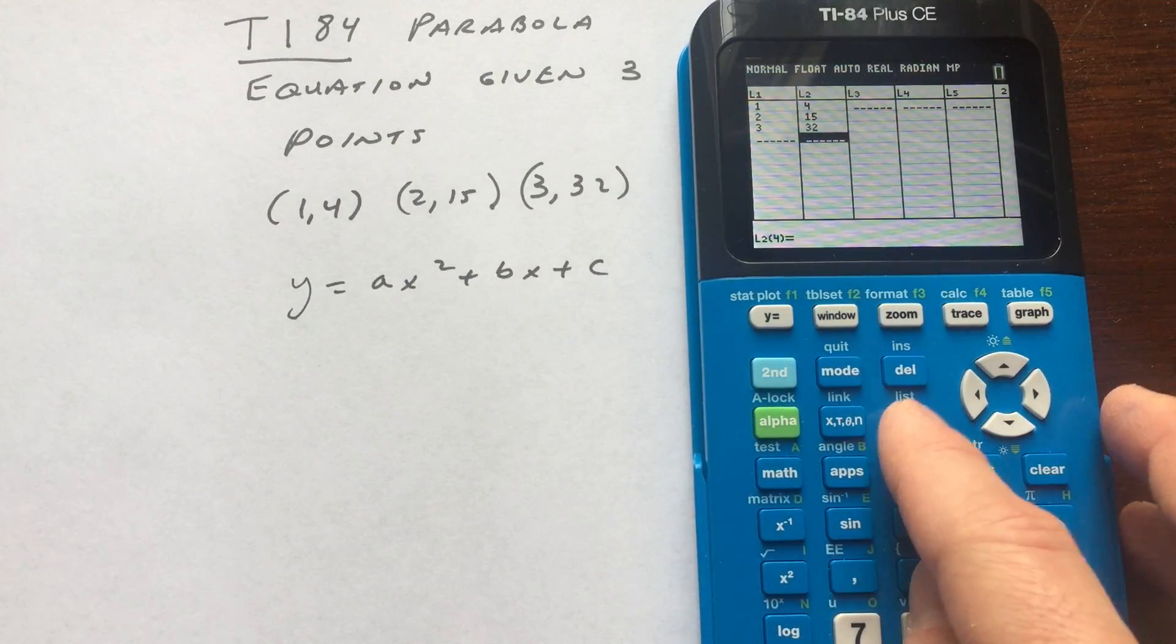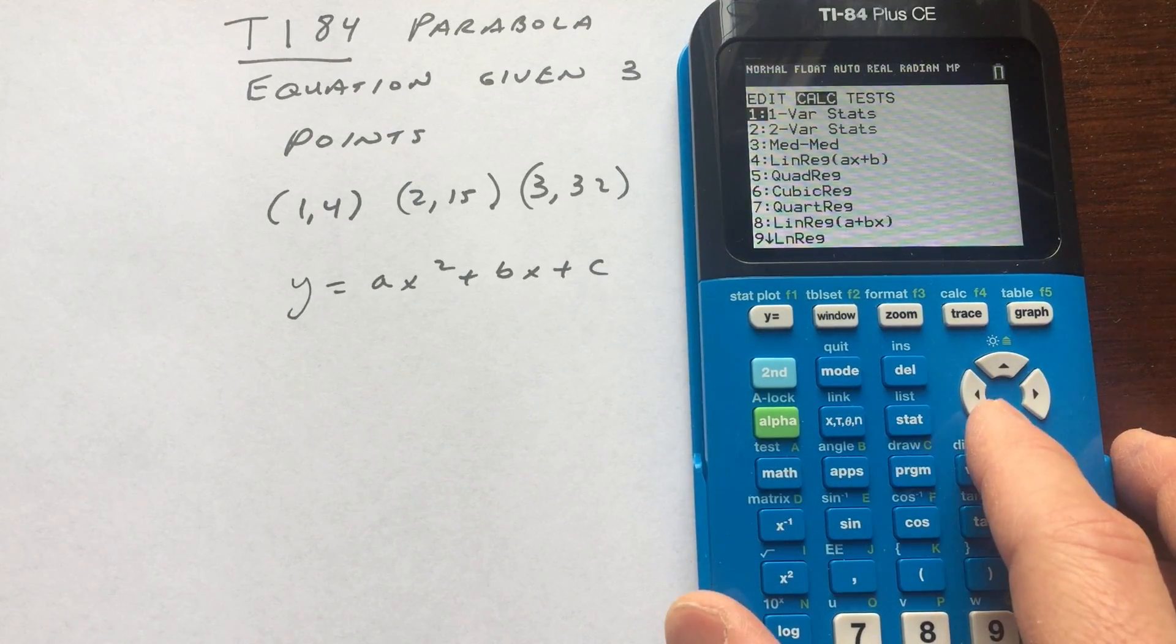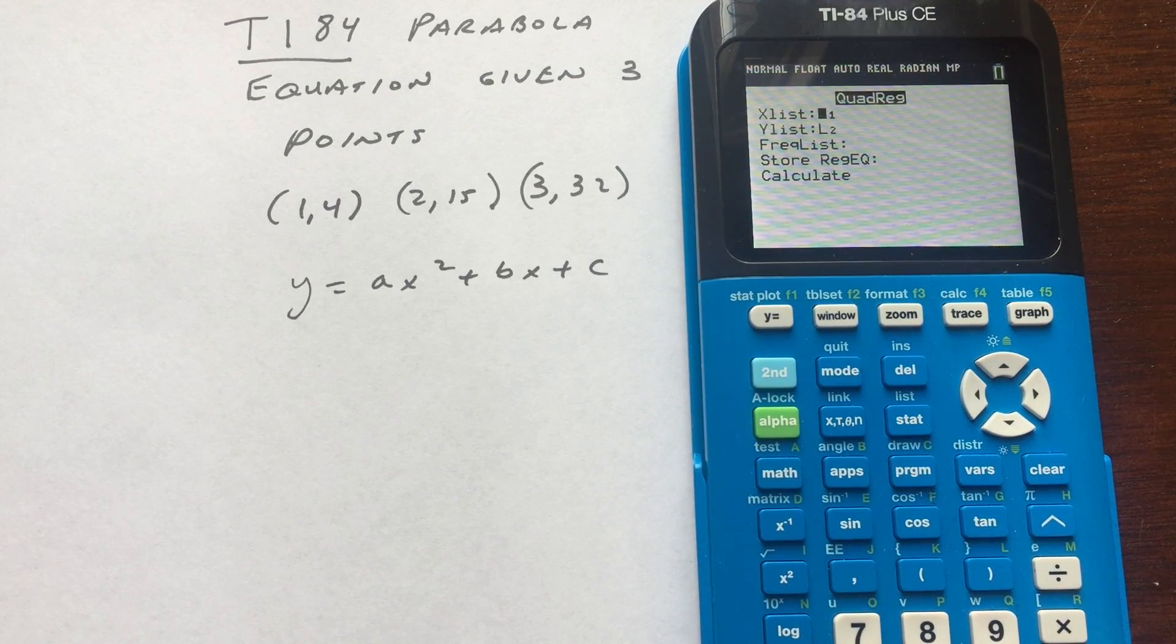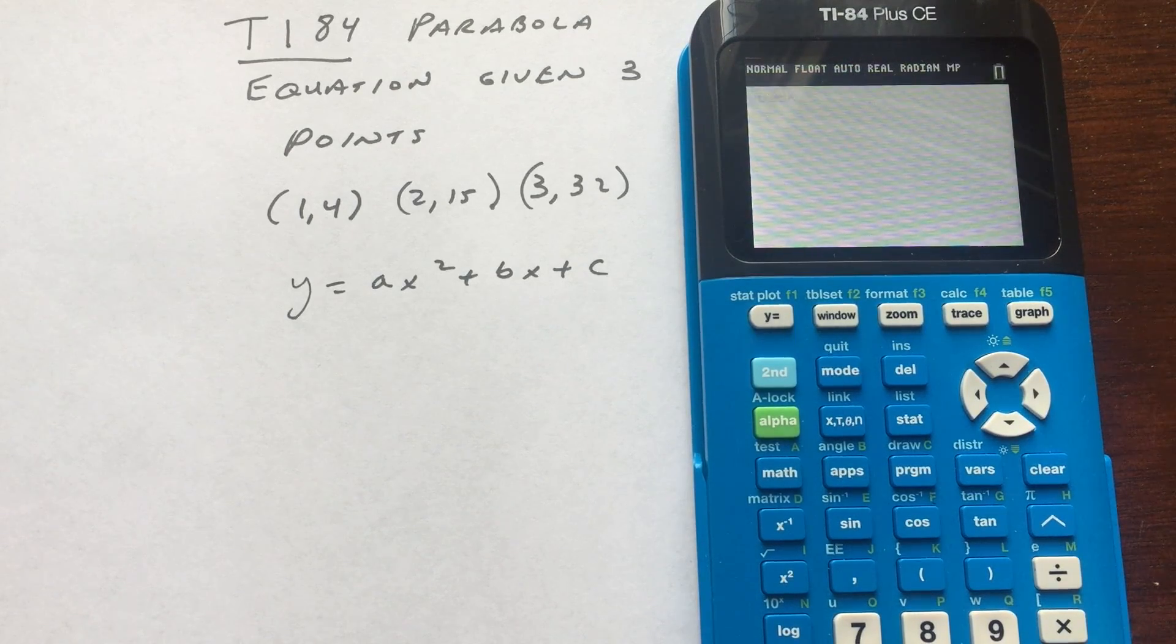Then what you want to do is go back into STAT, okay, for statistics. You want to arrow over to Calculate, and you want to head down to Quadratic Regression, number 5. I'm pressing Enter. And then you want to arrow down, List 1, List 2, all the way to Calculate, and then press Enter one more time.